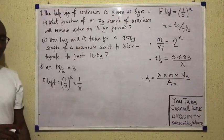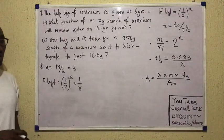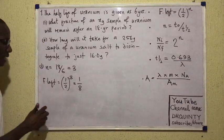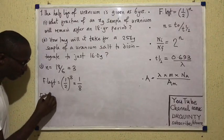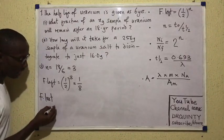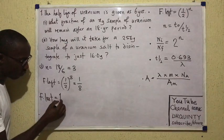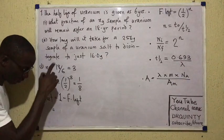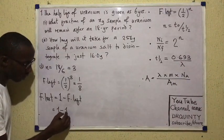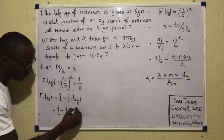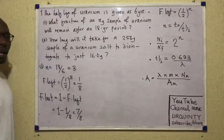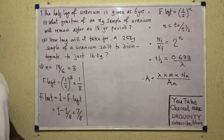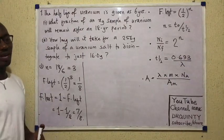No wonder the X-gram value was not given to us — it wasn't required. Bear in mind that sometimes instead of fraction left, they will ask for fraction lost. If asked for fraction lost, that would be 1 minus fraction left. So the fraction lost for this case would be 1 minus 1/8, which is 7/8. But what is more commonly asked is fraction left.